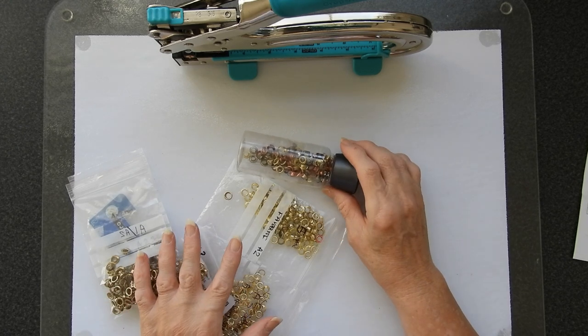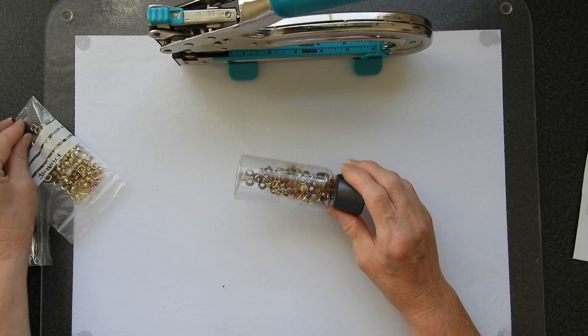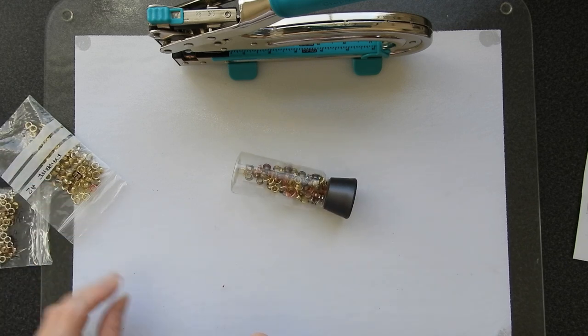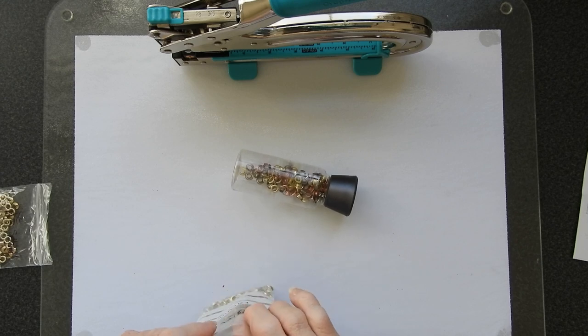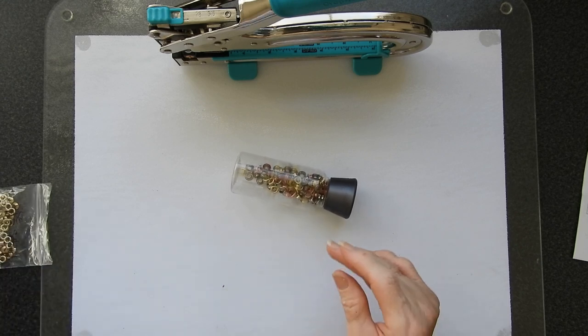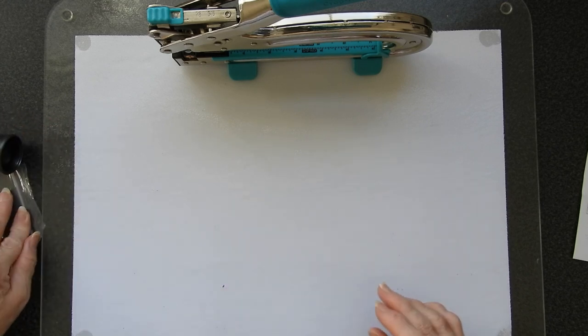Nowhere on the packaging does it say you have to buy We Are Memory Keepers eyelets or indeed that you have to buy imperial sized eyelets. That's because other ones will work, you'll just have to work out what the settings are. But there was nothing in the information to say that.